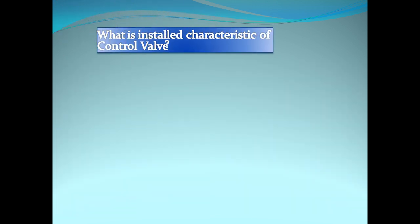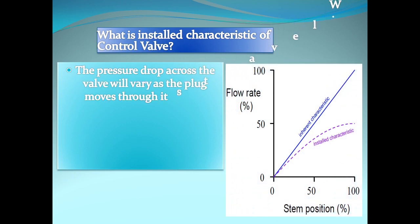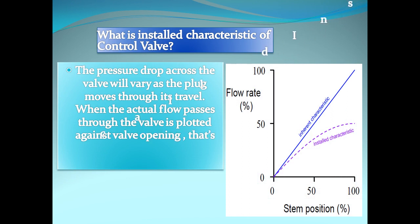What is installed characteristic of control valve? The pressure drop across the valve will vary as the plug moves through its travel. When the actual flow passes through the valve is plotted against valve opening, that's called installed flow or installed characteristic.